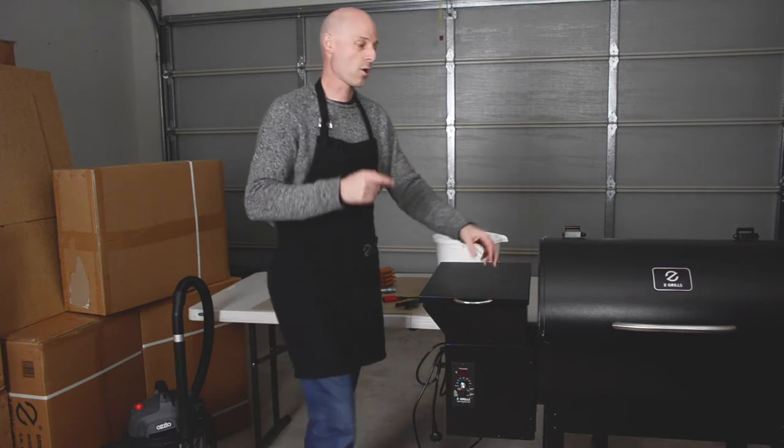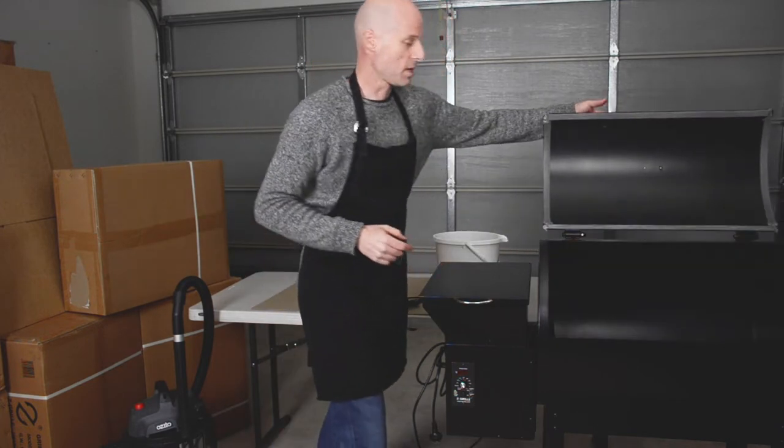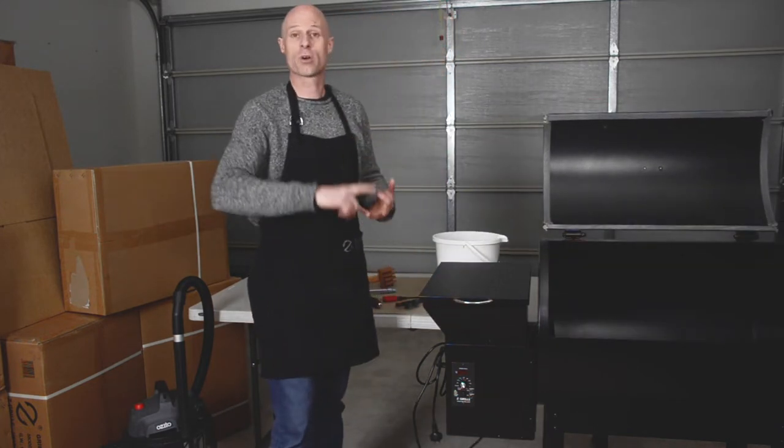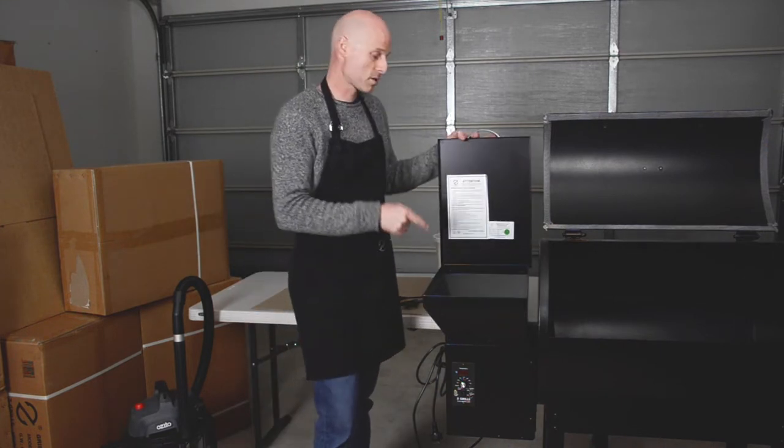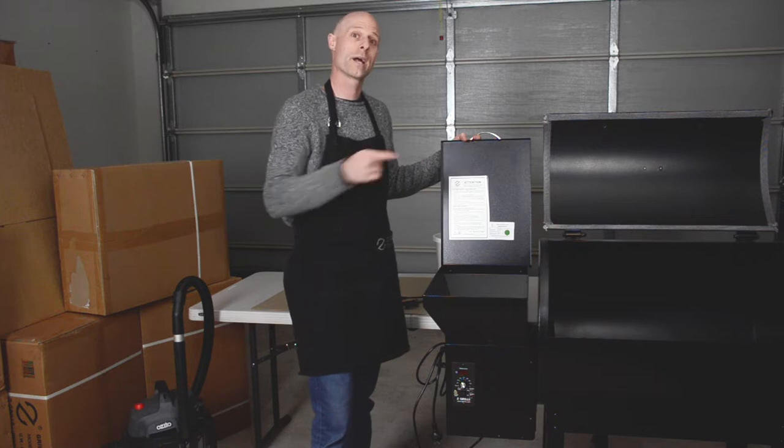Before we get started let's take everything out of the grill. So the baffle plate, the grease tray, the grill racks, take them all out. You also want to remove all the pellets from inside the hopper so let's look at how to do that.